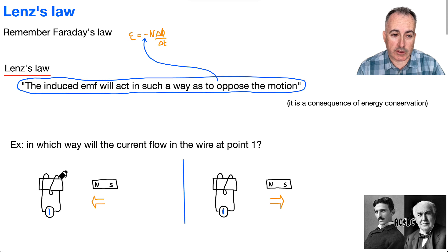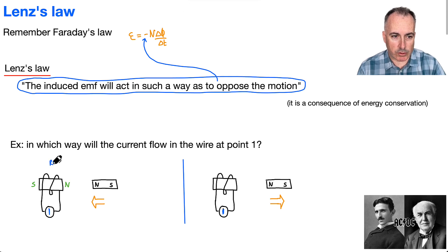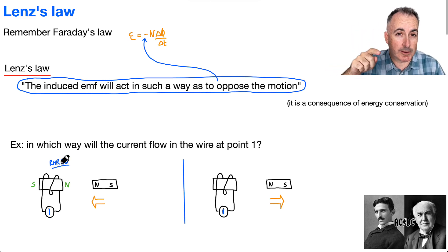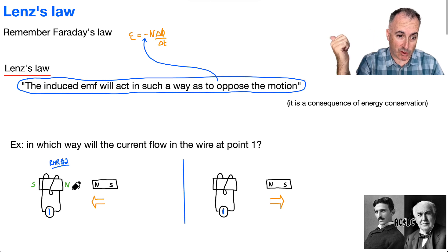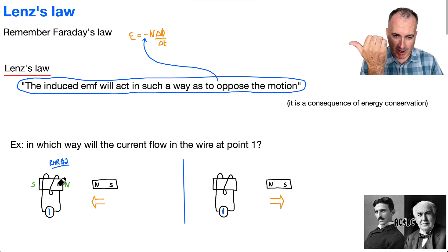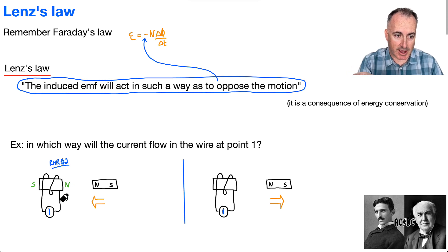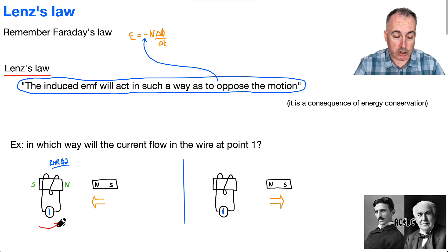If you imagine you've got a north coming towards you, you would want to place a north facing it to repel it. Now let's use right-hand rule number two — that's the one where you curl your fingers. The fingers curl in the direction of the current, and your thumb tells you the direction of the magnetic field. I have to put my thumb to the right, because that's north. When I look at the way my fingers are curling, they're curling from the back and towards my face, meaning the current is going counterclockwise.